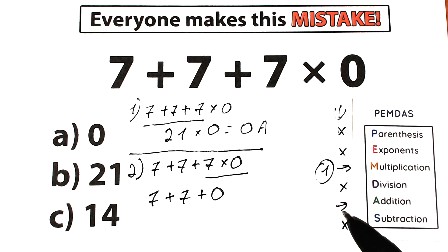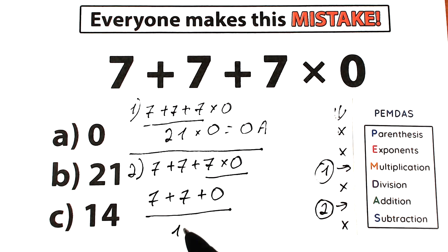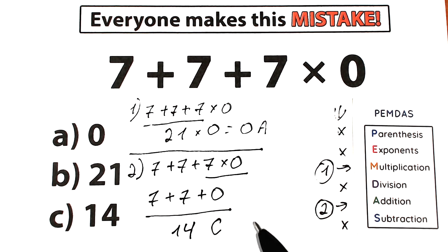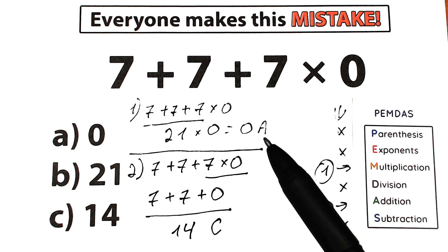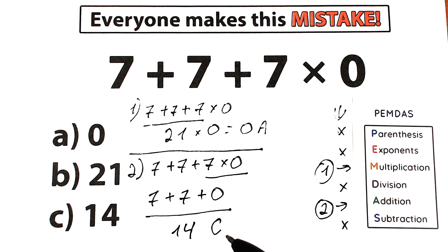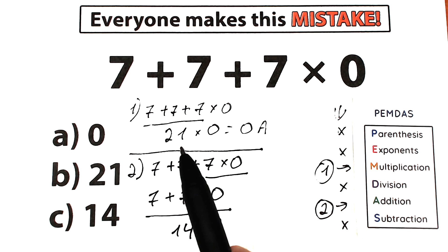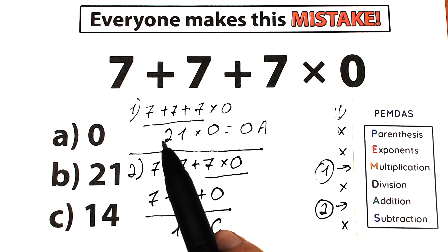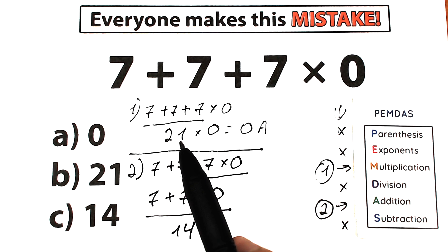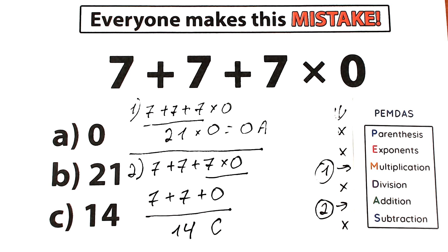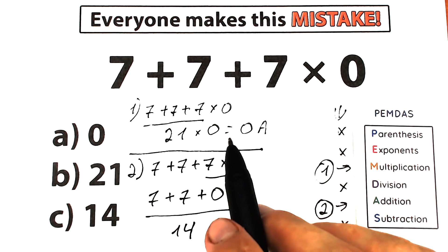Our last step is pretty basic addition: 7 plus 7 plus 0 equals 14. This is option C. A lot of students argue about the correct answer — one part says option A is correct, another says option C. If we solve from left to right — 7 plus 7 plus 7 equals 21, then 21 times 0 equals 0 — that is absolutely wrong because we should start with multiplication.